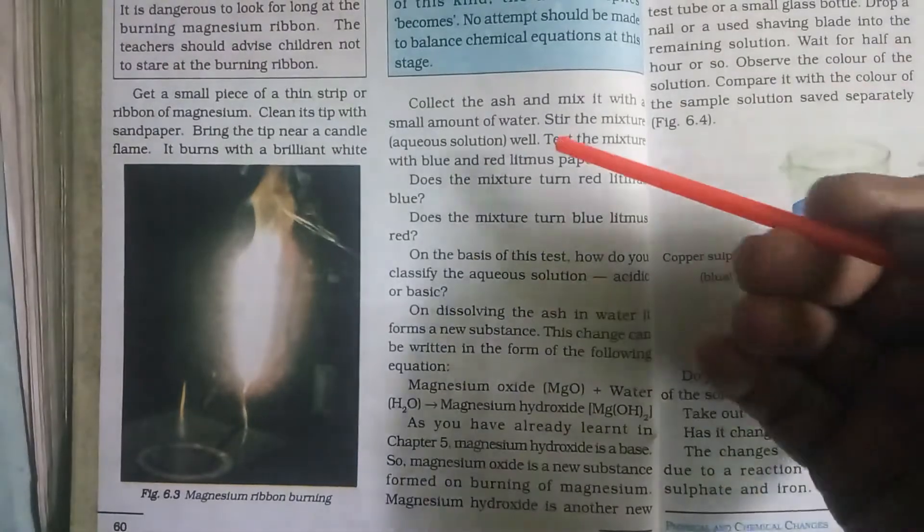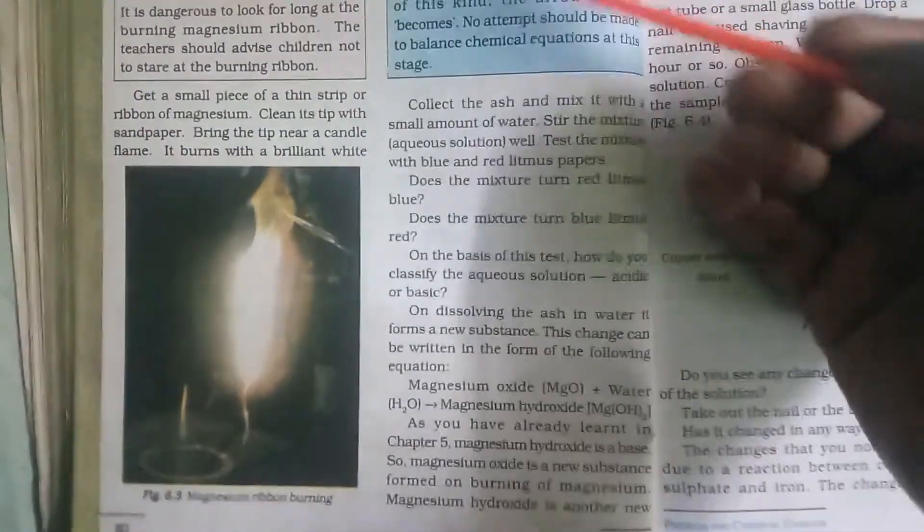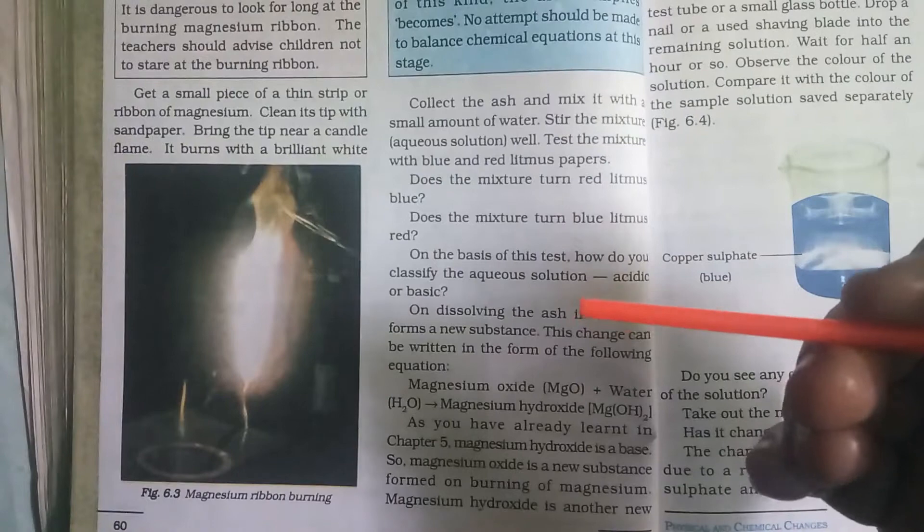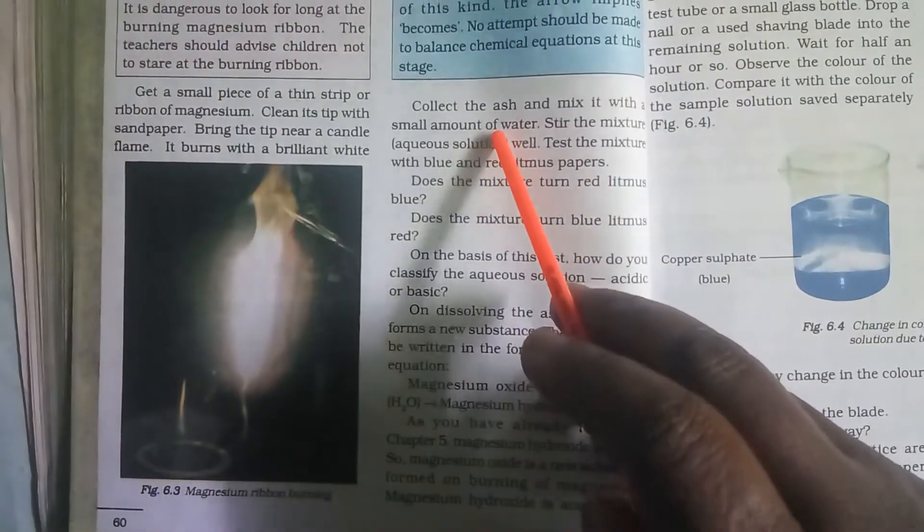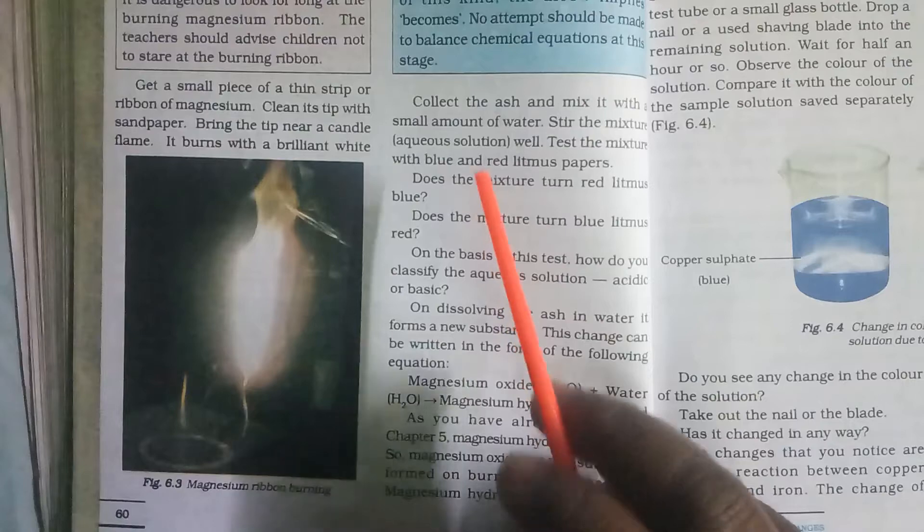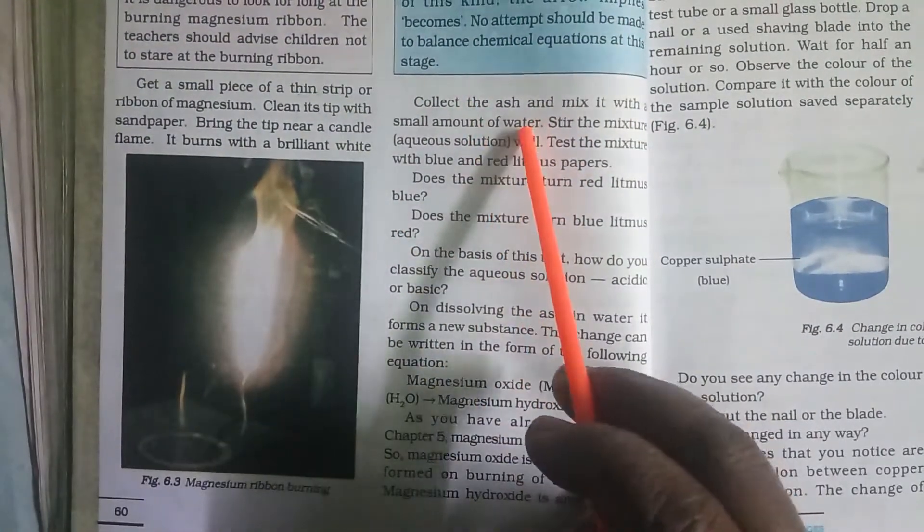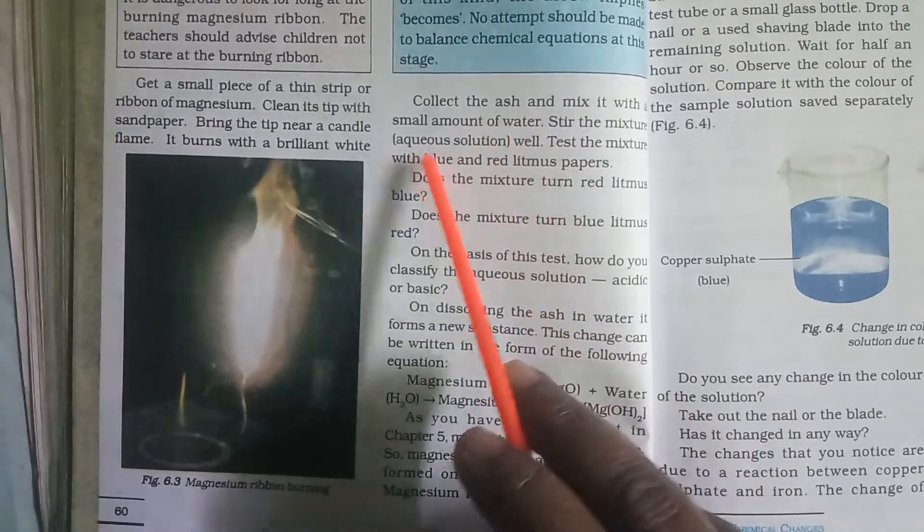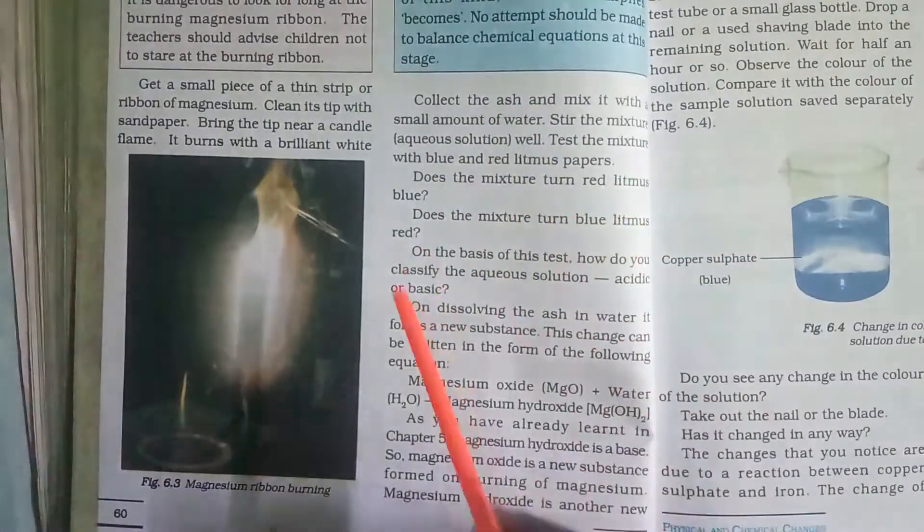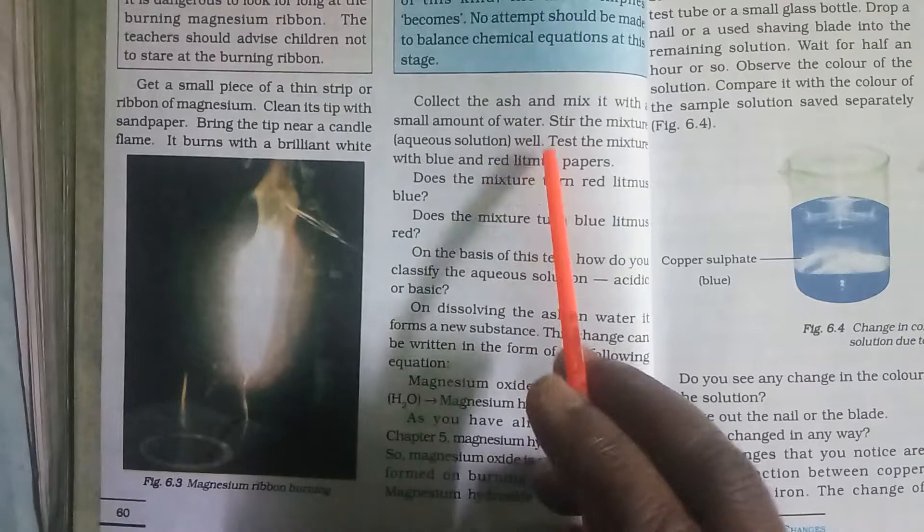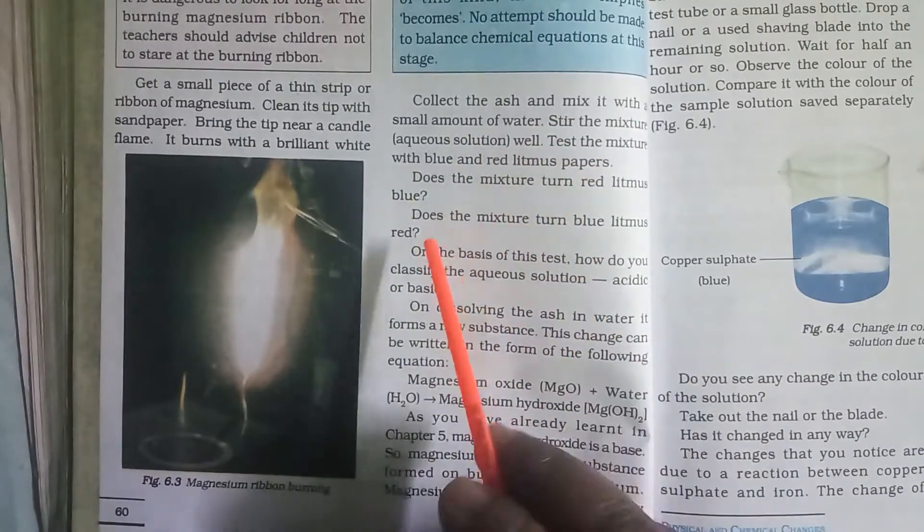Whatever powder we got after finishing with the experiment, that is magnesium and oxygen, take this ash and mix it with a small quantity of water. Stir it well in the aqueous solution with the help of the test tube.